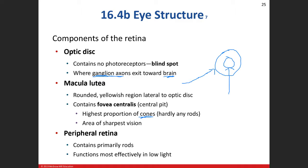Rods are not great for sharpness, but excellent in low light — they're your night vision photoreceptors. When you wake up in a dimly lit room, your rods are working hard. The fovea centralis is where you want to focus incoming light for the sharpest image. The peripheral portions of the retina are mostly where rods are found.